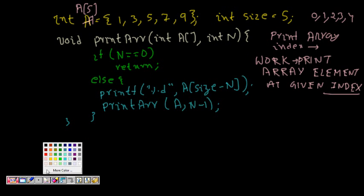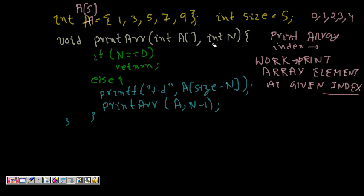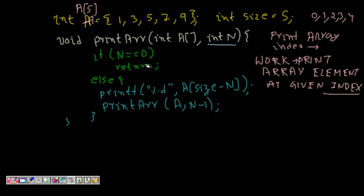The function is printArray(int a[], int n), where n relates to our index. If n is 0 then return — if the size of the array is 0 we cannot do anything. Otherwise, we call printf with a[size - n], where size is the maximum size (5 here).